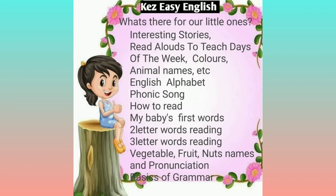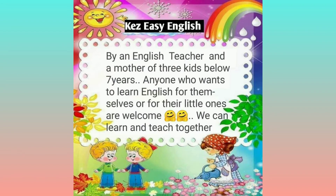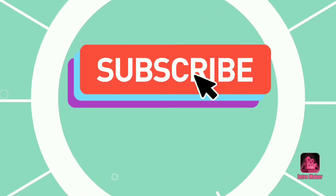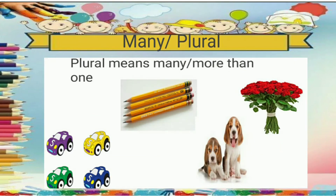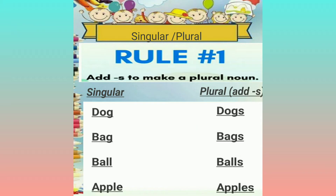Hello, welcome to our channel Kez Easy English. Today we are going to deal with the second rule in making plural nouns. If you want a detailed explanation of the first rule, you can watch our previous video. Before we get into the video, if you are new to this channel, please don't forget to subscribe. We have learned that singular means one and plural means many or more than one. The first and most simple rule was to add S at the end of nouns to make them plural.